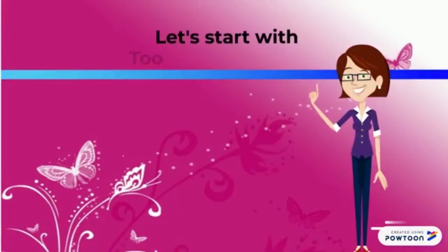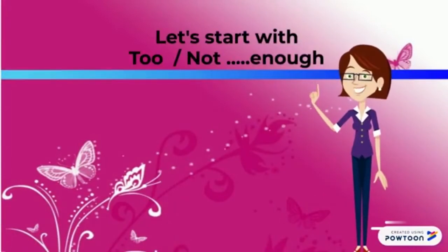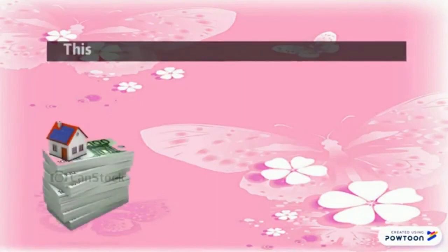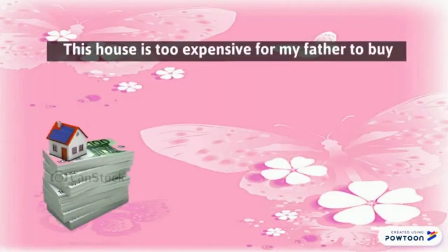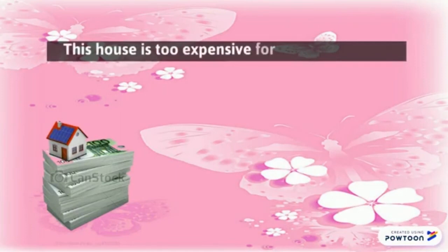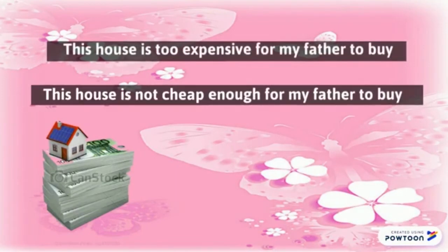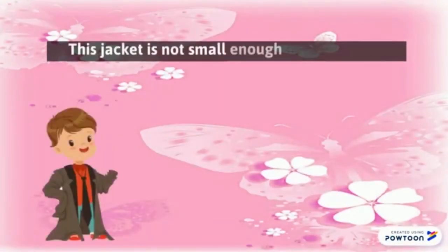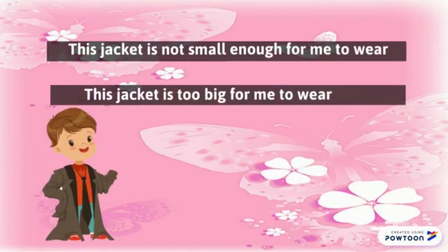Let's start with 'too' and 'not enough.' Look at these pictures. This house is too expensive for my father to buy. This house is not cheap enough for my father to buy. In this example, we use the opposite of expensive — cheap. This jacket is not small enough for me to wear. This jacket is too big for me to wear.